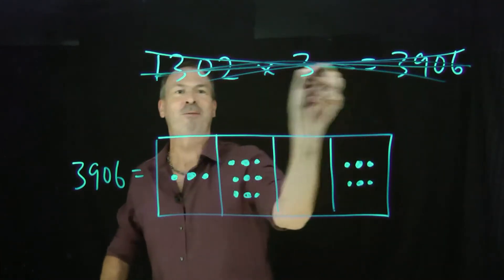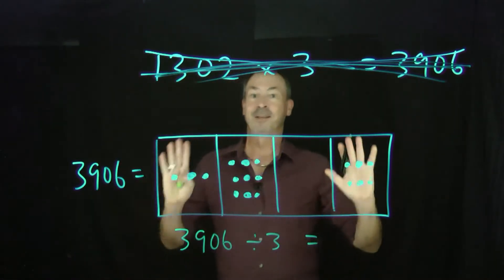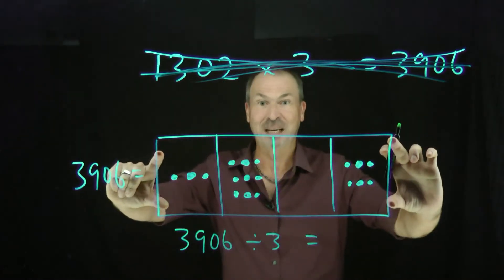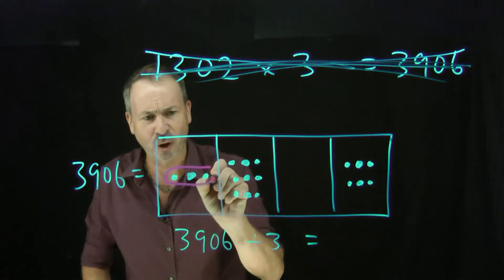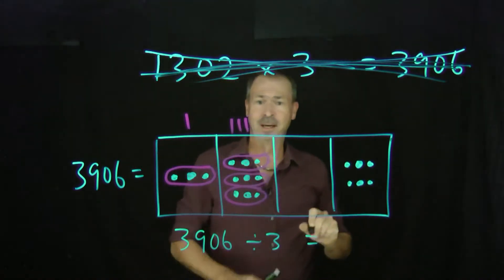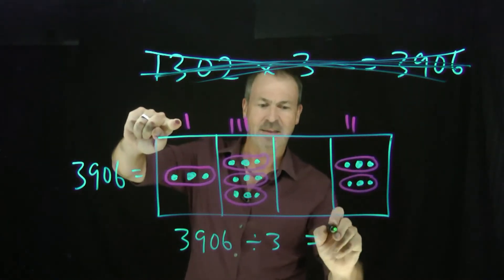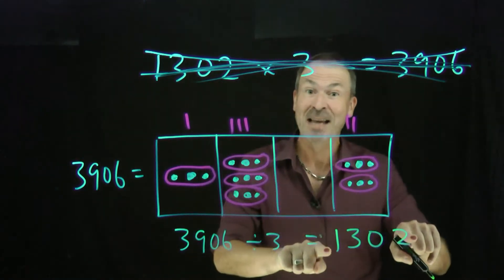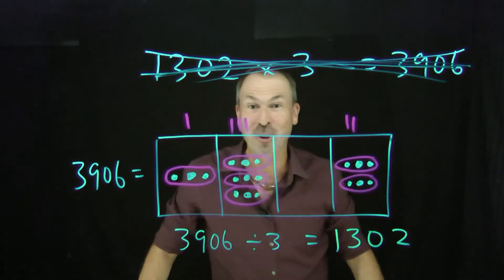But let's now pretend we didn't see that. Let's start with the answer and see if we can go backwards: 3906 divided by 3 equals what? It's really a multiplication problem in disguise — what got multiplied by 3 to give this answer? I look at the diagram and ask what got tripled. A dot here got tripled and made three, a dot there got tripled and made three, and so on. I can see 1 dot at the thousands level, 3 dots at the hundreds level, no dots at the tens level, and 2 dots at the units level were tripled to make 3906. So it must have been that 1302 was tripled to make 3906. We are now doing division with just dots and boxes!